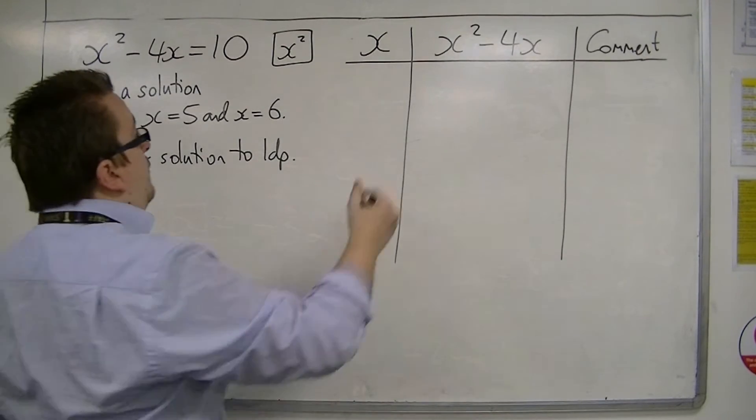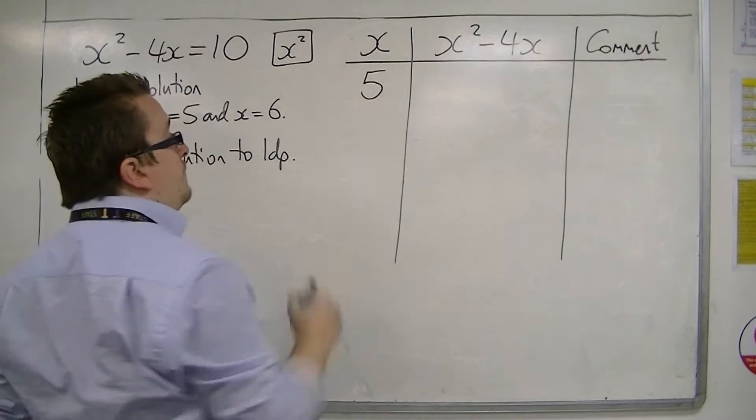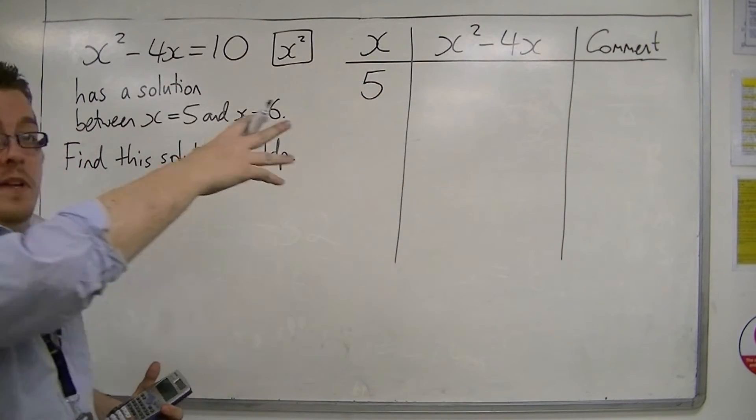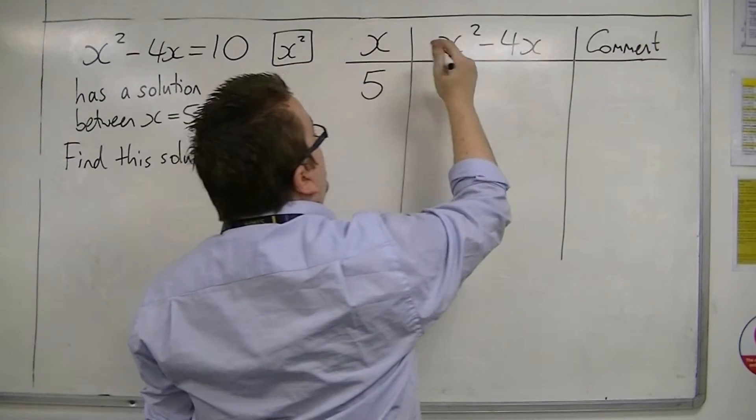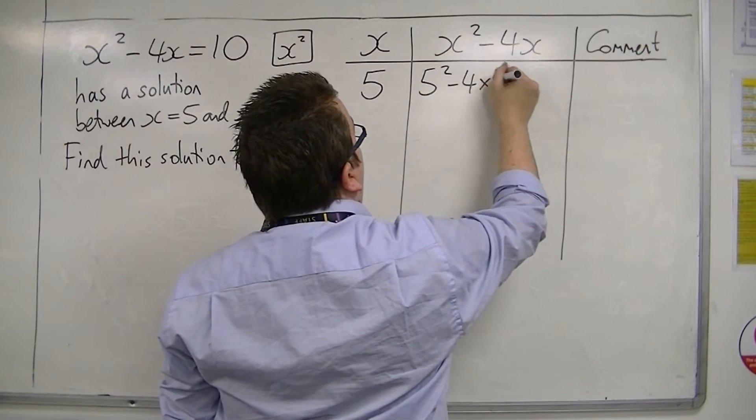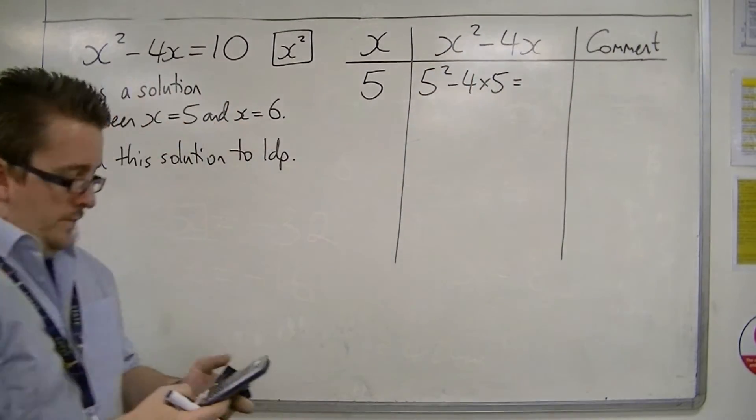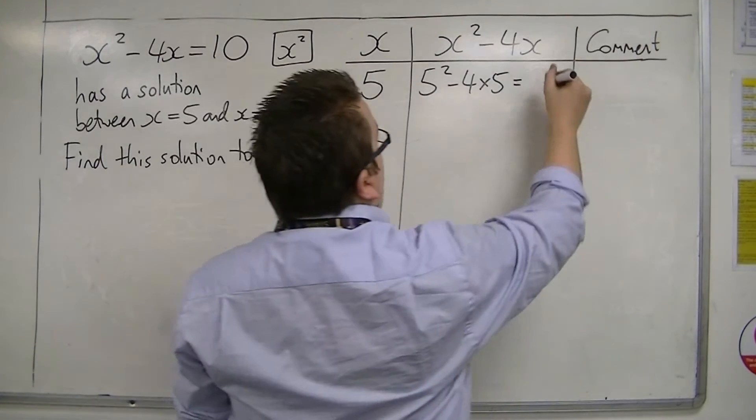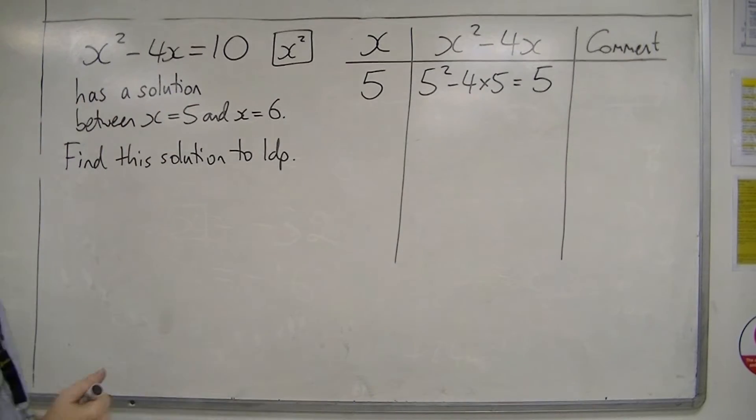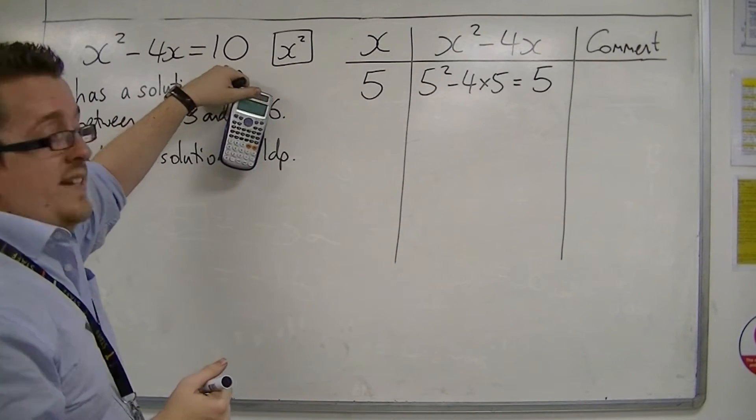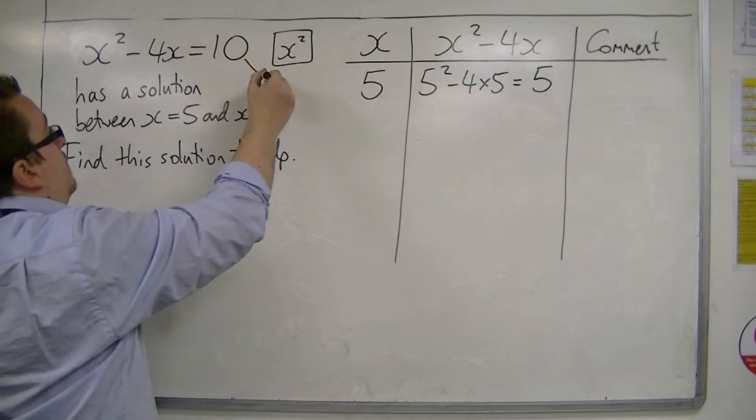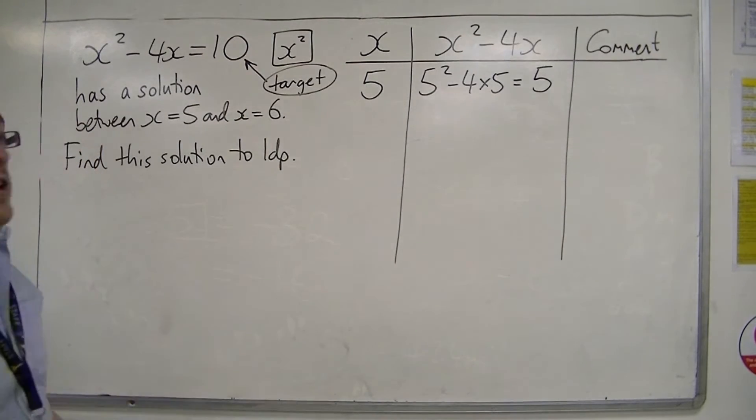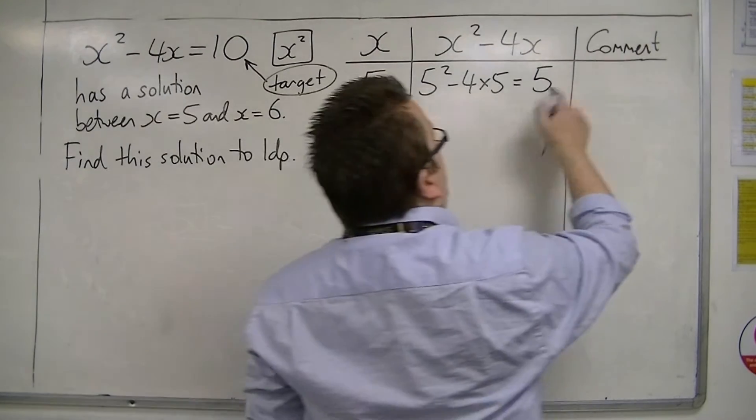So we're going to start off with x is 5, and we're going to substitute that into the formula. So we've got 5 squared minus 4 lots of 5. 5 squared minus 4 lots of 5, and that's just 5. And we know that the answer that we need to get is 10. This is my target. The target is 10. So 5 is too small.